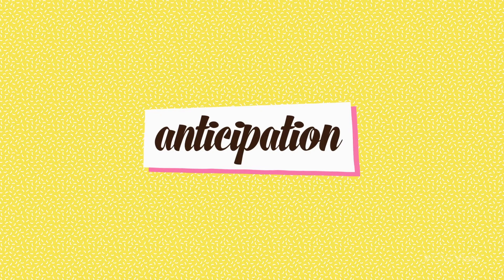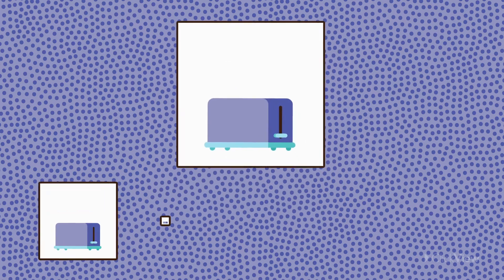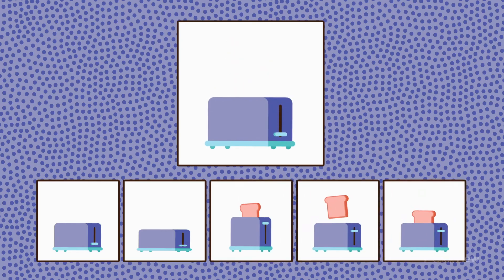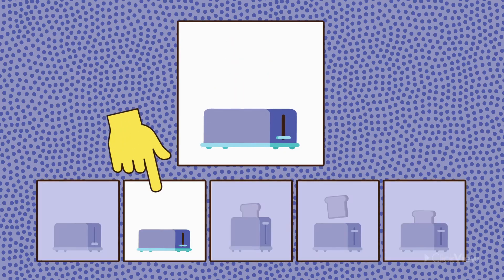Anticipation. This principle is used when characters or objects make an action that gives viewers a clue about what is going to happen next. In this frame, we can see an action that anticipates what is coming next — the toast jumping out of the toaster.